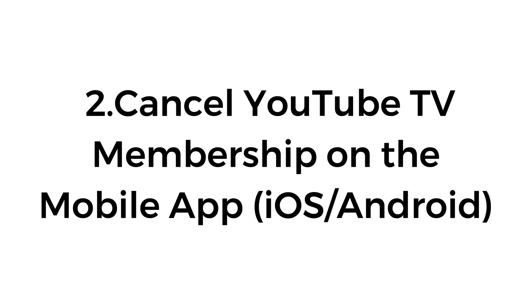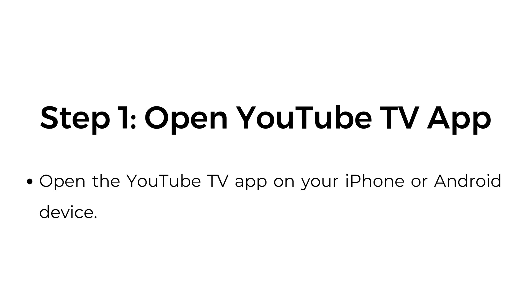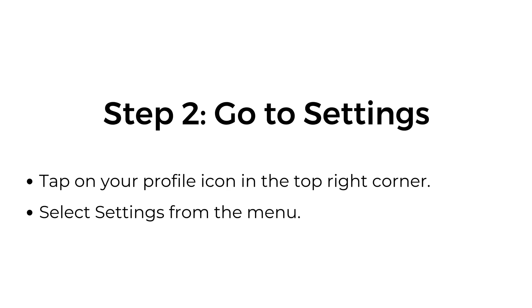Number two: cancel YouTube TV membership on the mobile app. Step one, open the YouTube TV app on your iPhone or Android device. Step two, go to settings. Tap on your profile icon in the top right corner and select settings from the menu.